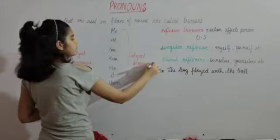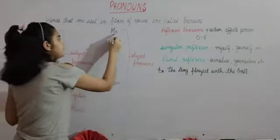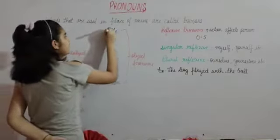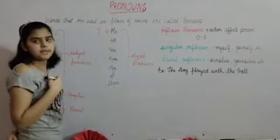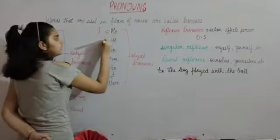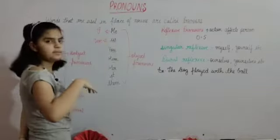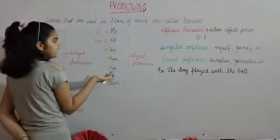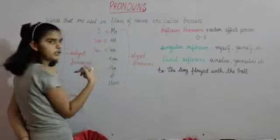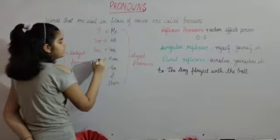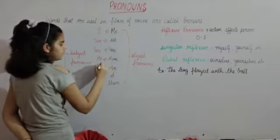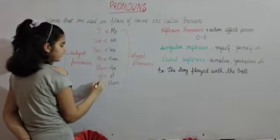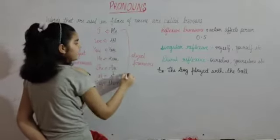Jo kisi object ke liye use hota hai, aur subject ke liye subject pronouns use hote hain. So: me, us, you, him, her, it, them. Me jo hai woh I ko indicate kerta hai — me matlab bhi mera hi hota hai aur I matlab bhi mera hi hota hai. Us jo hai, woh we ko indicate kerta hai. You — matlab tumhare liye, you ke jagah pe you hi rehta hai. Him jo hai woh he ke liye. Her jo hai woh she ke liye. It same hi rehta hai. And then them hai, woh they ke liye use hota hai. In sab ko hum log kehte hain object pronouns.